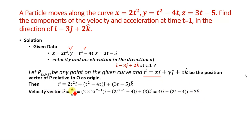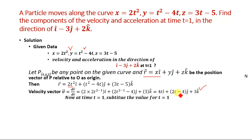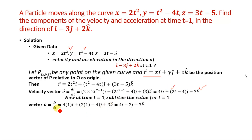Substituting t = 1 into the velocity equation: v = 4(1)i + (2(1) - 4)j + 3k = 4i - 2j + 3k. This is the velocity of the particle moving along the curve at time t = 1.